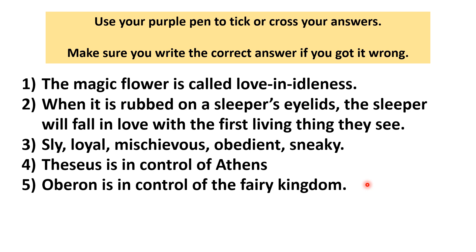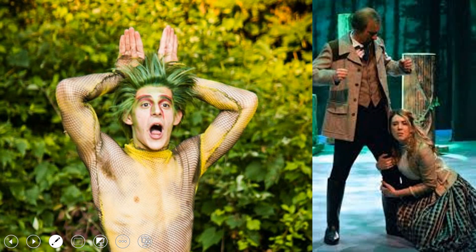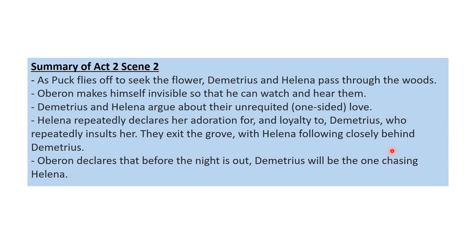Okay, so as you saw from the learning objective we are going to read Act 2 Scene 2 today. Act 2 Scene 2 involves these characters. We have Puck here. Notice how I've got a different picture of Puck this lesson — that's because a lot of different people play the character of Puck in a lot of different plays, so there are loads of different interpretations of what he would look like. And then we have this couple, Helena and Demetrius, and they are the main focus of our lesson today. Before we read the play let's have a look at this brief summary of Act 2 Scene 2.